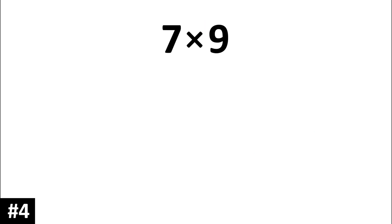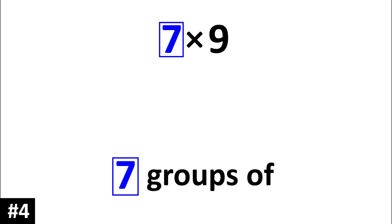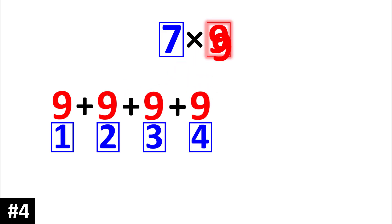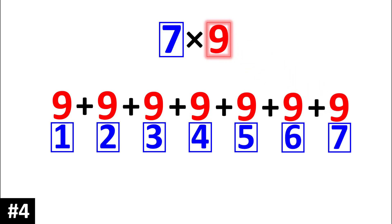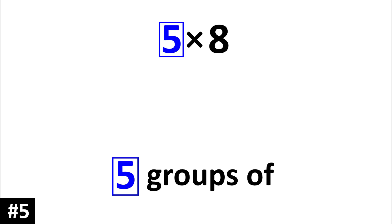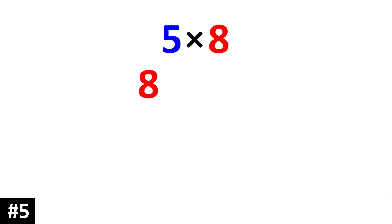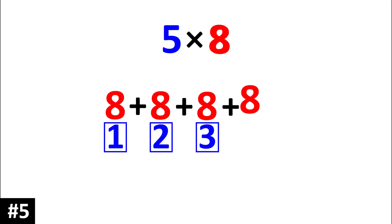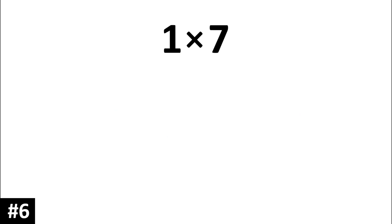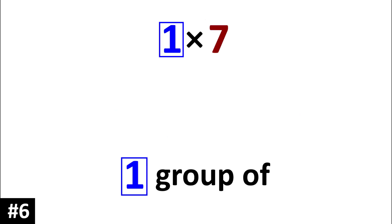Seven times nine is seven groups of nine. Five times eight is the same thing as five groups of eight. One times seven is the same thing as one group of seven.